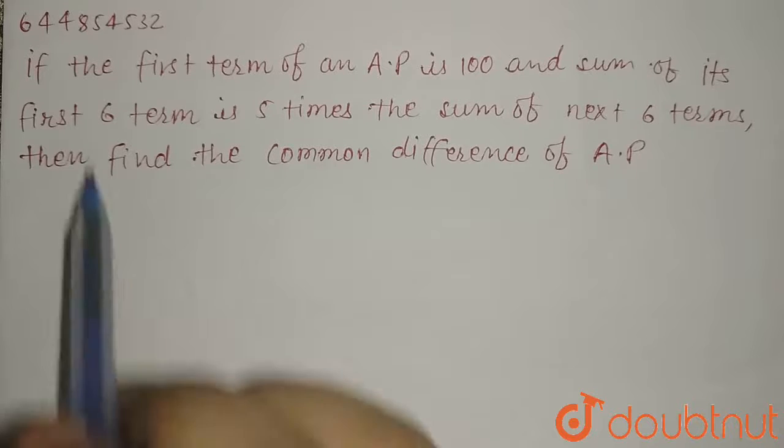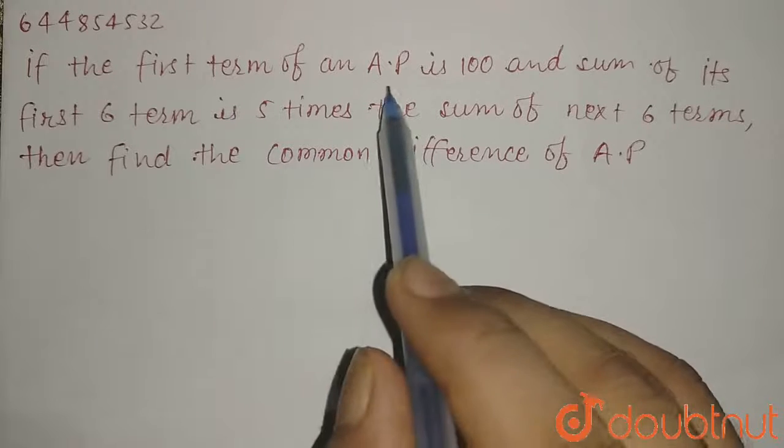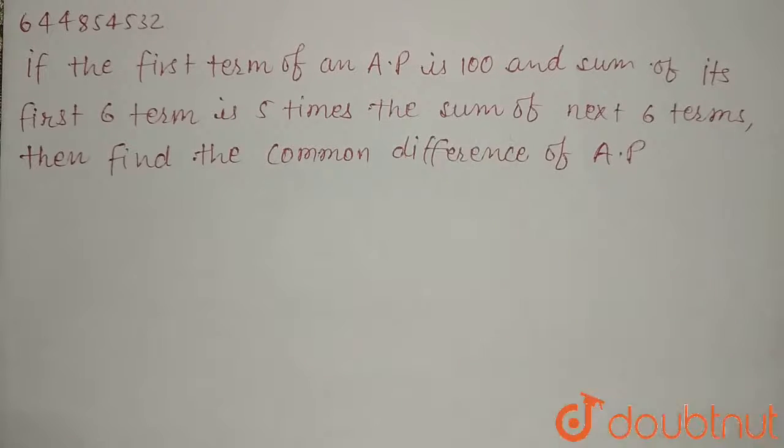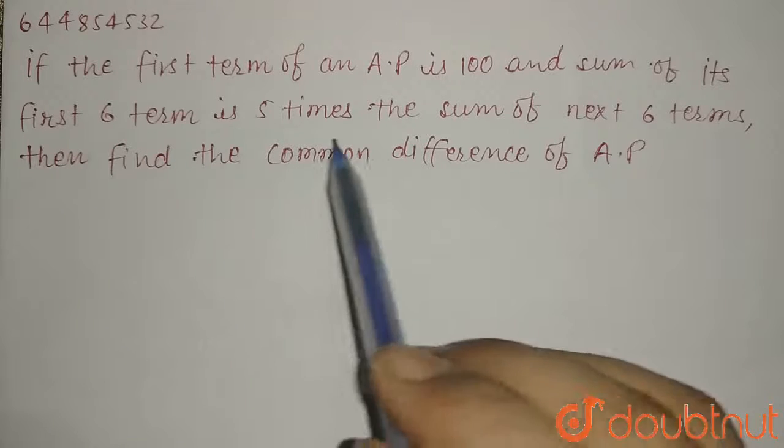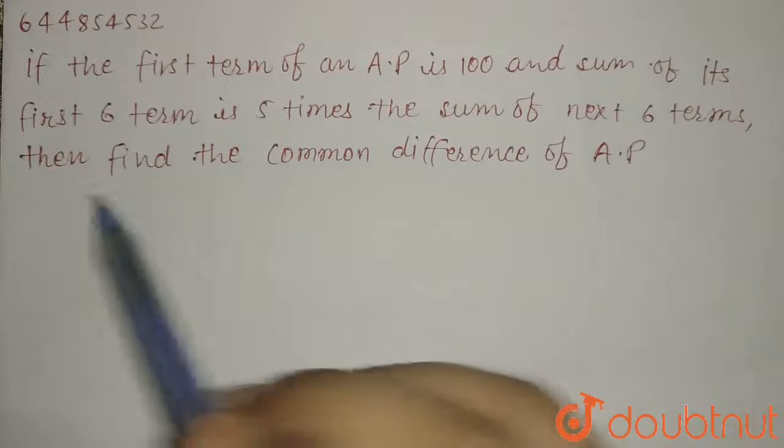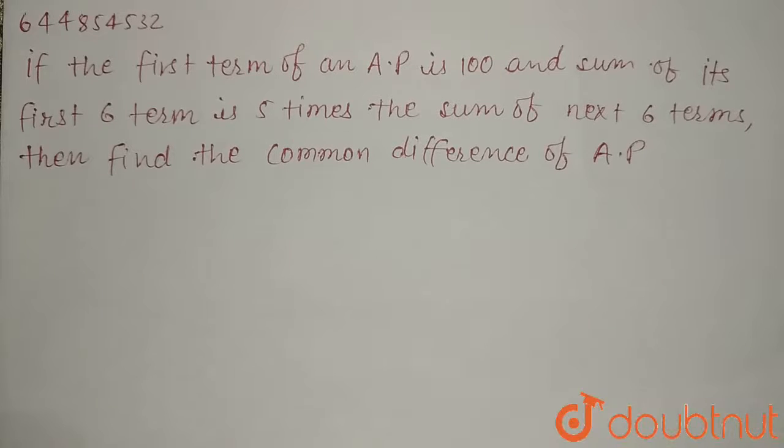If the first term of an AP is 100, and the sum of its first 6 terms is 5 times the sum of next 6 terms, then we have to find the common difference of that AP.